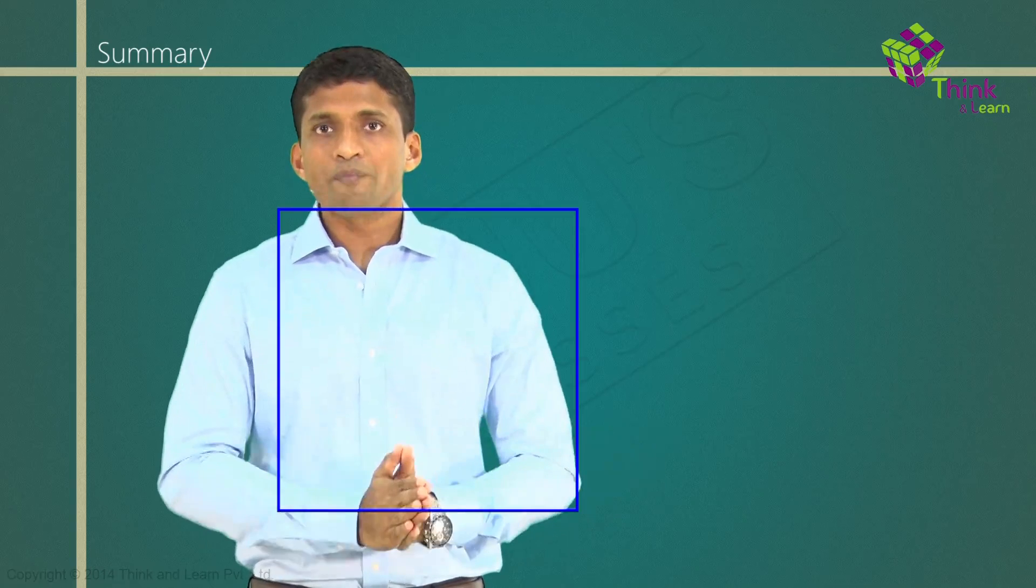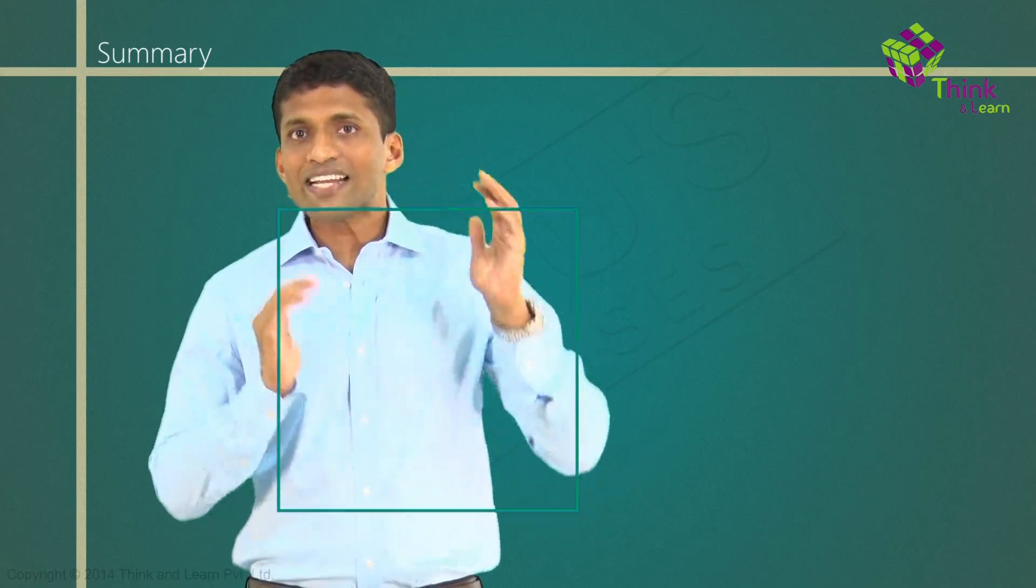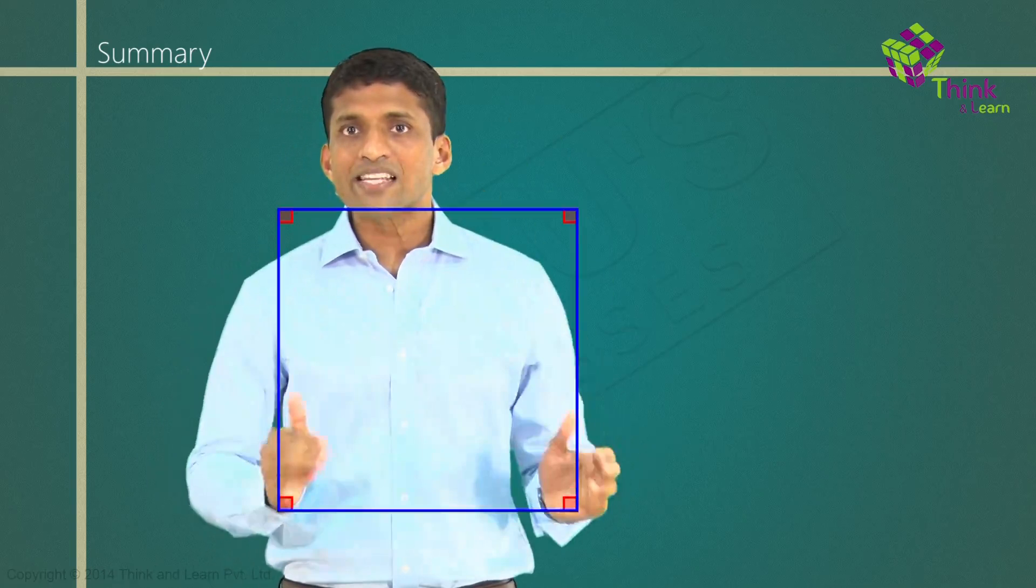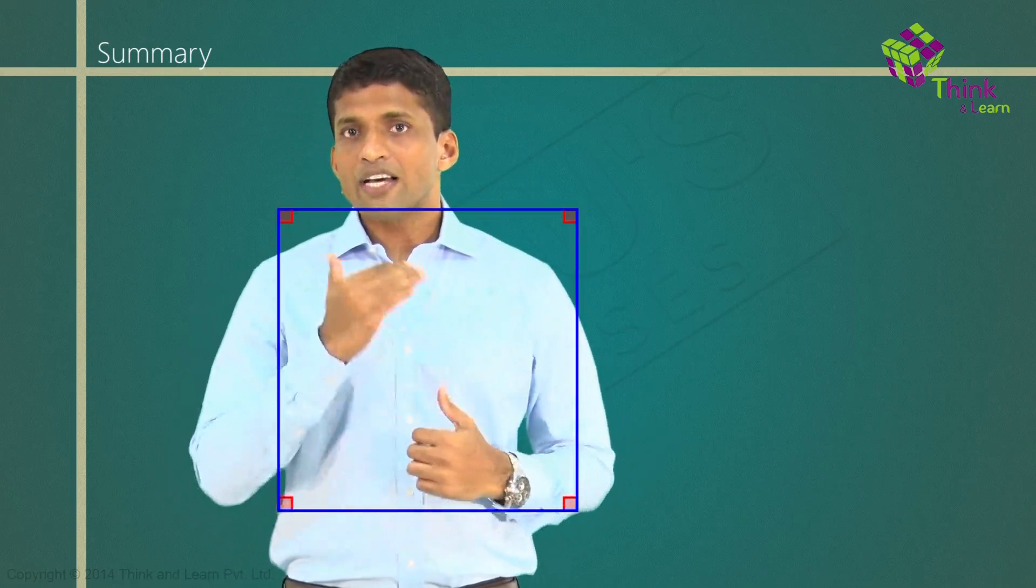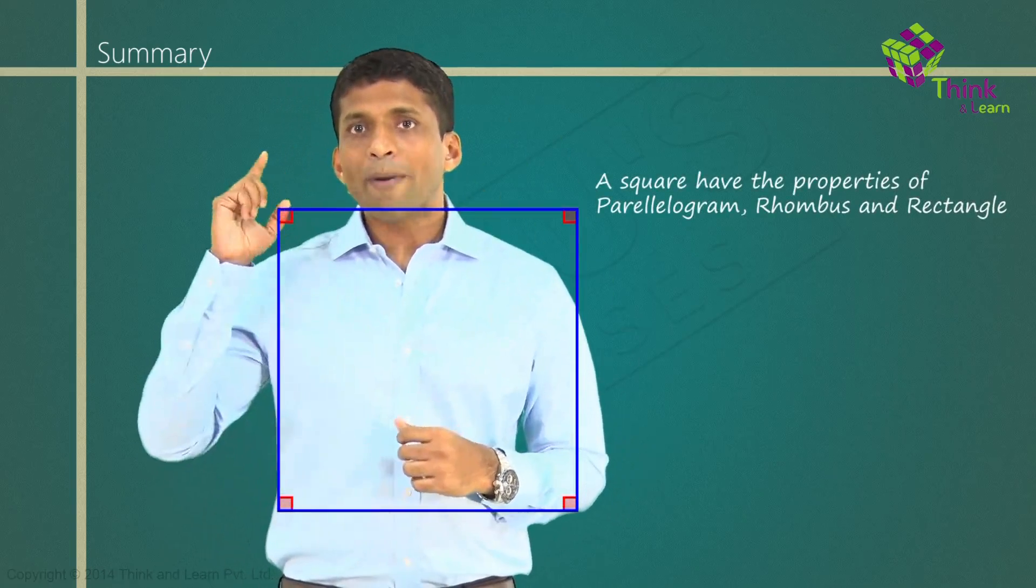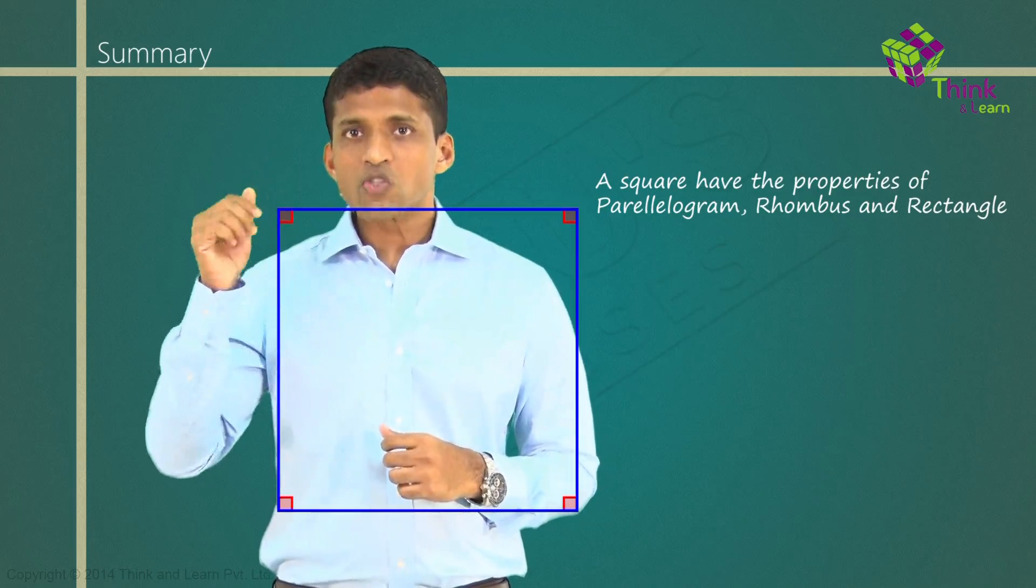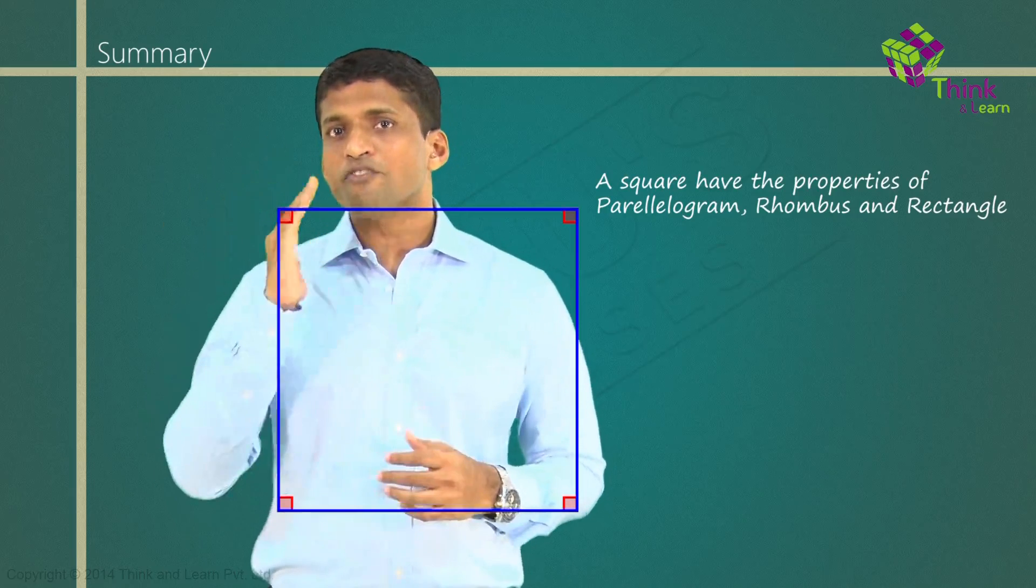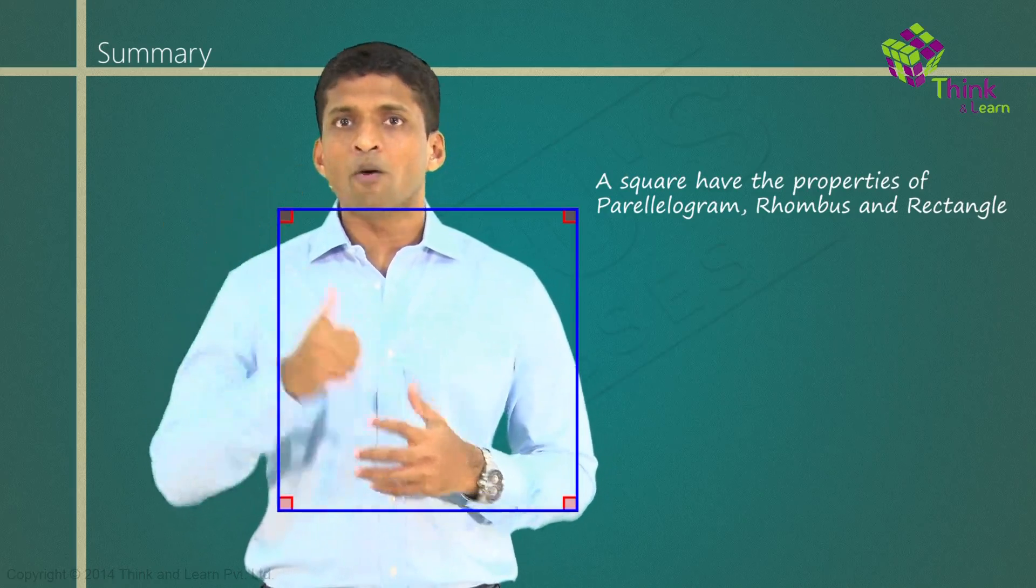Next, is when you consider a rhombus and a rectangle together, we will end up getting a square like this, where all sides are equal, all angles are equal. That is why a square will have properties of a parallelogram, a rhombus, and a rectangle.